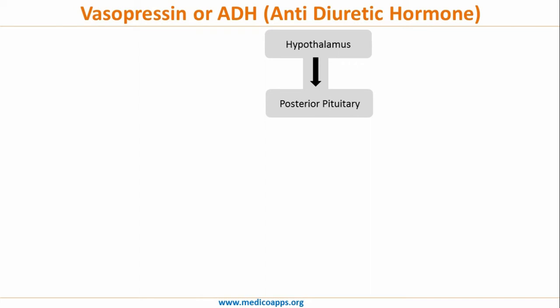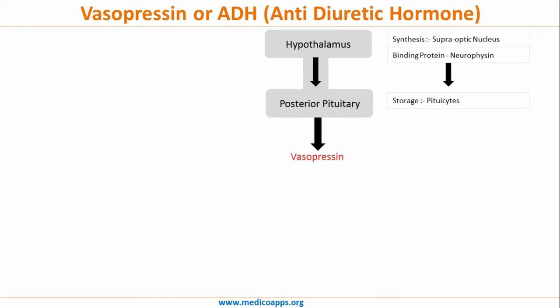ADH is synthesized in the hypothalamus and from there it is moved and stored in the posterior pituitary. In the hypothalamus, synthesis occurs in the supraoptic nucleus, and from there, with the help of binding protein neurophysin, it is moved to the posterior pituitary where it is stored in pituitocytes.